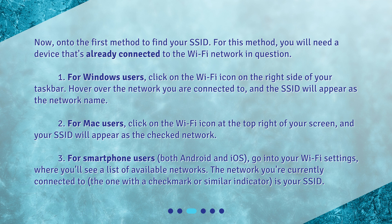For smartphone users — both Android and iOS — go into your Wi-Fi settings, where you'll see a list of available networks. The network you're currently connected to, the one with a checkmark or similar indicator, is your SSID.